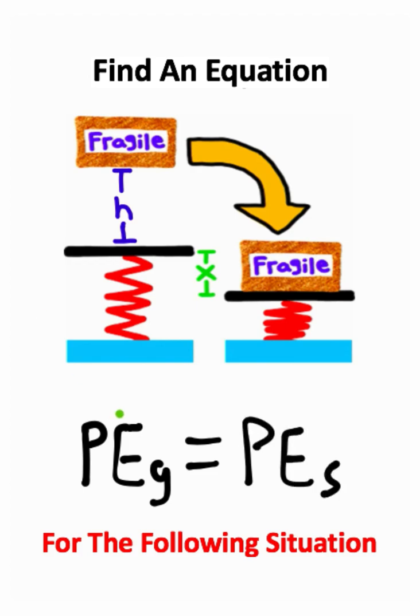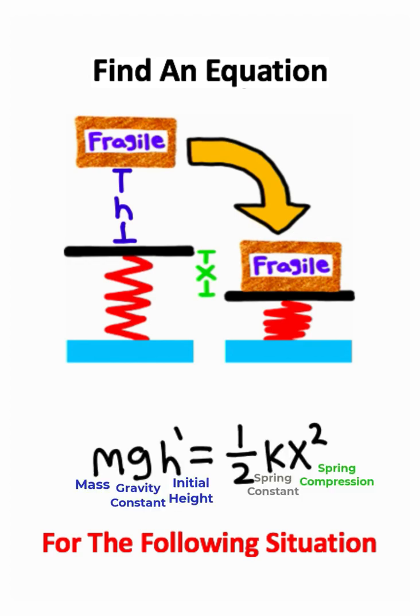And if you look up the equations for gravitational and elastic potential energy, you should end up with an equation that looks like this. Now you may have noticed that I used H prime here instead of H.